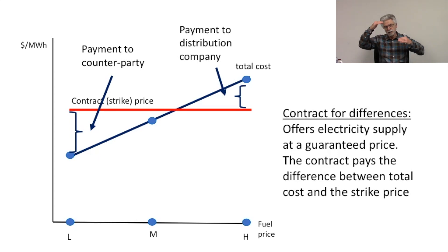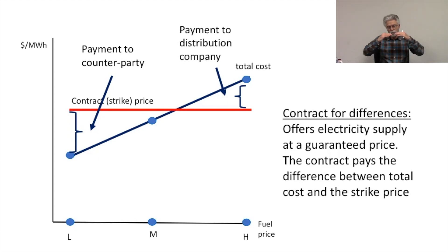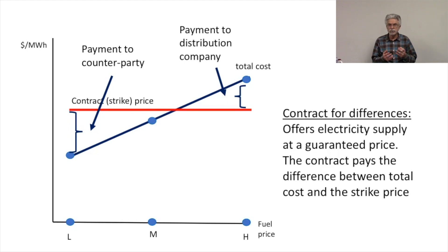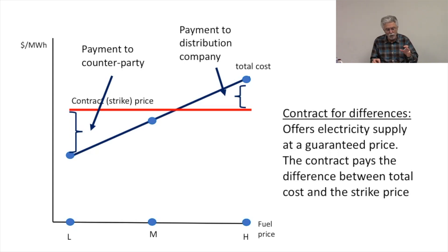You can see how the risk is shifted from the party buying the contract for difference and the party offering the insurance, offering the payments. The strike price of a contract for difference can go up or down depending on the level of insurance the interested party wants. Once this contract is written, it really doesn't matter who is doing the generating. This contract could be sold from one generator to the next and it wouldn't matter to the counterparty at all, because they have the same risk no matter who owns the contract.